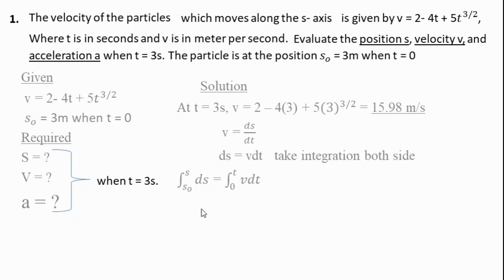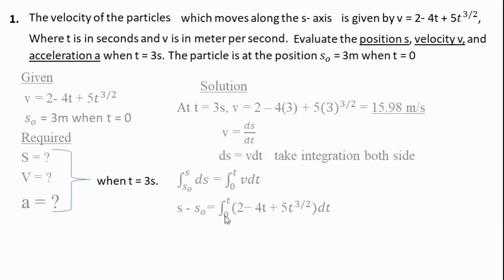The integration of ds gives s minus s-naught on the left side. On the right side, we substitute the velocity equation v = 2 - 4t + 5t^(3/2) and integrate term by term. Integrating 2 gives 2t, integrating -4t gives -4t²/2, which simplifies to -2t².